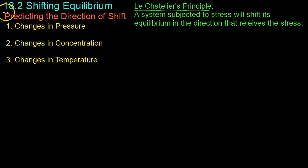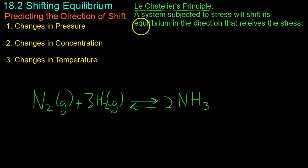This video covers Chapter 18, Section 2, which deals with shifting the equilibrium of systems. This all has to do with Le Chatelier's Principle. Basically, a system subjected to stress, chemical or physical, will shift its equilibrium in the direction that relieves this stress the easiest. Based on Le Chatelier's Principle, we're going to discuss three major ways you can shift the equilibrium of a chemical reaction.